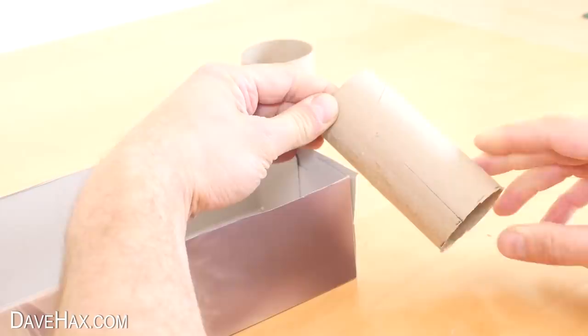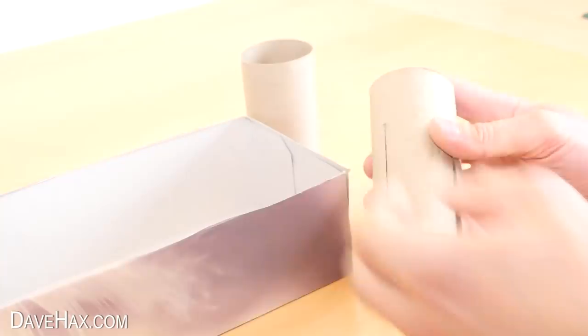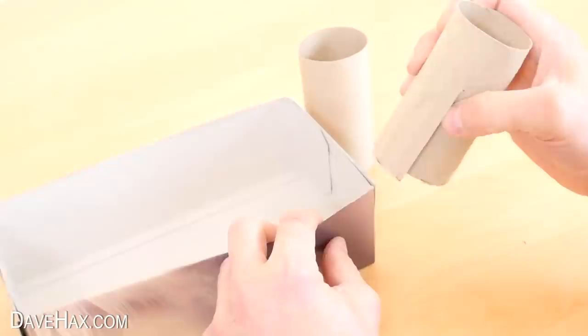Then I rotated the roll about 90 degrees and did exactly the same again. This is now going to slide over the corner of the box like this to hold it in place.